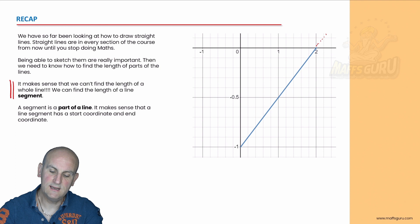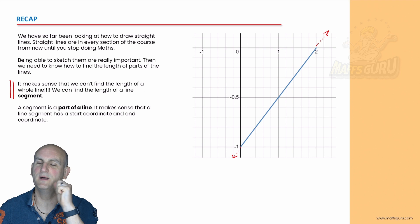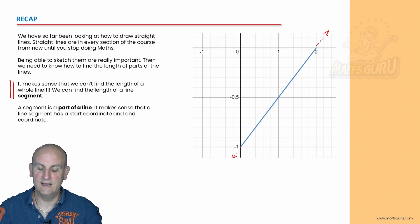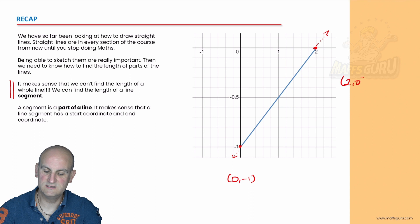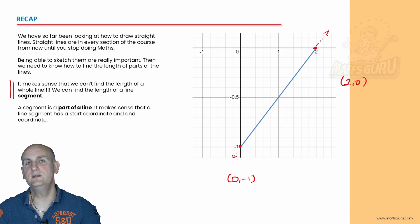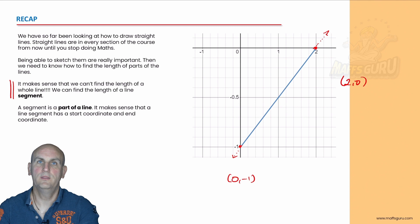We know that a line goes off to infinity, but we only want a small section of it. So we've decided we would like to take a little bit of that line that goes from the point (0, −1) through to (2, 0). I've just taken two points arbitrarily, and I want to now find the middle point — the middle of that line.